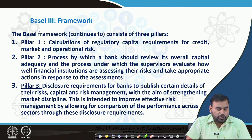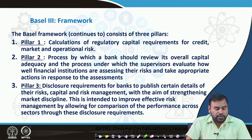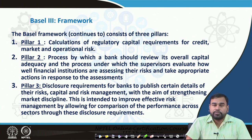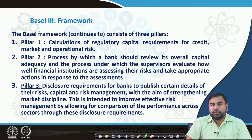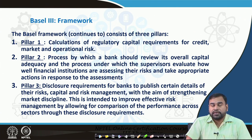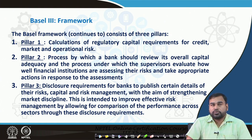Pillar 3 is based on disclosure norms — what things the bank has to disclose to everybody in the public forum as well as to regulatory bodies. This disclosure requirement for banks basically means publishing certain details of risk, capital, and risk management with the aim of strengthening market discipline. If there is a lot of transparency in terms of actual disclosures, it will improve effective risk management by allowing comparison of performance across sectors through these disclosure requirements.